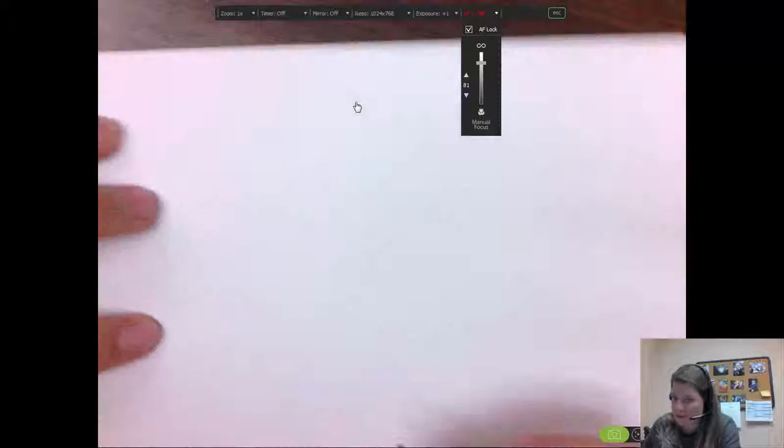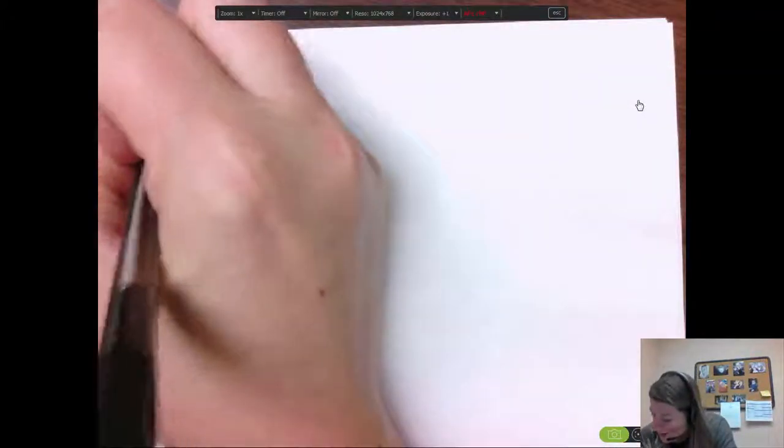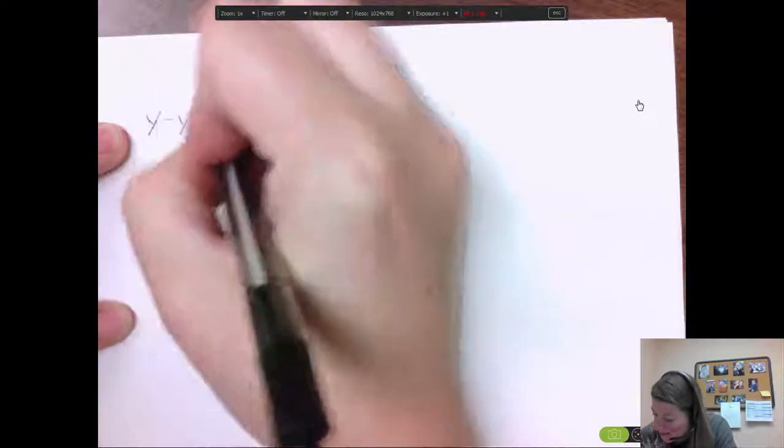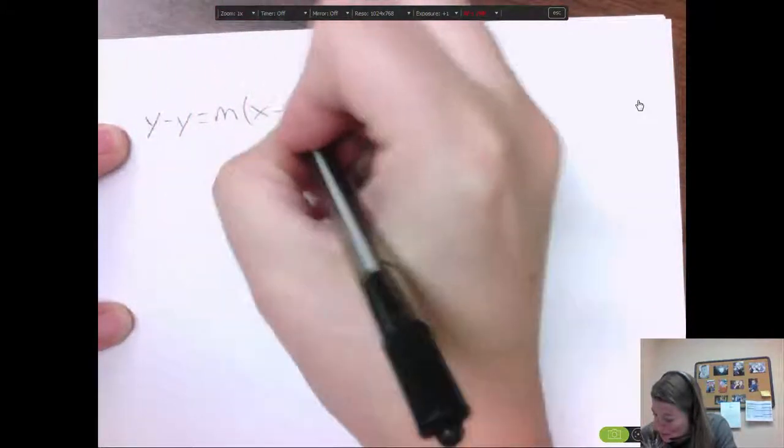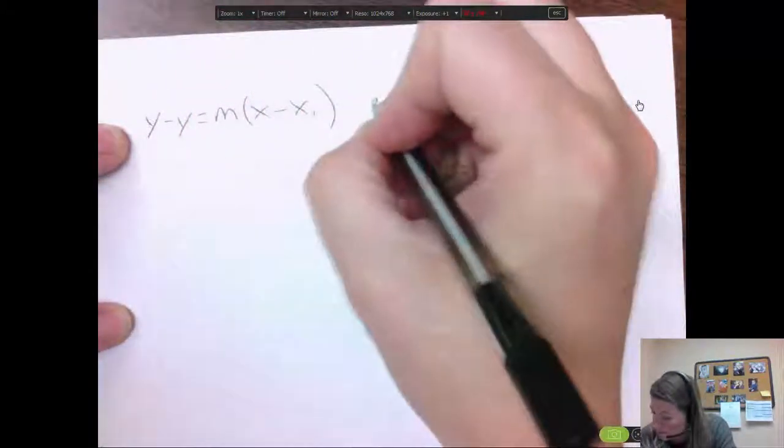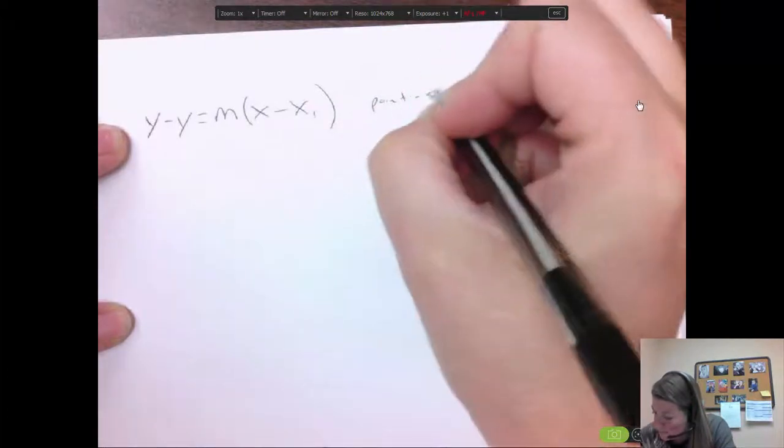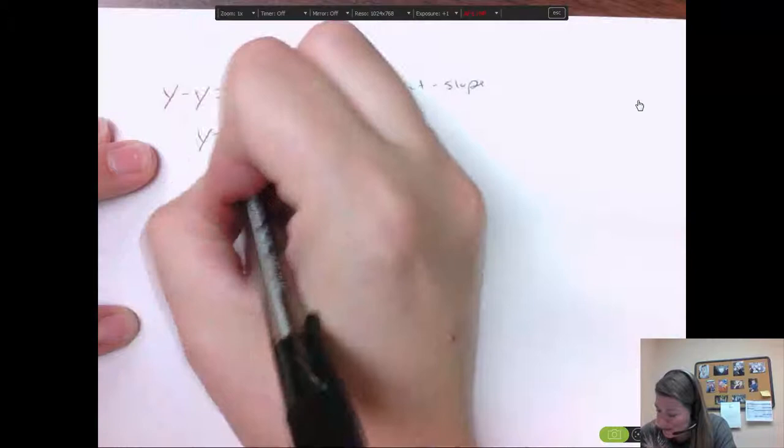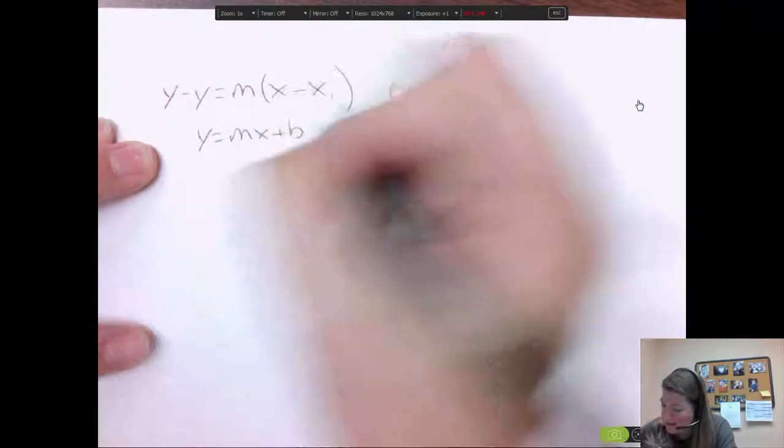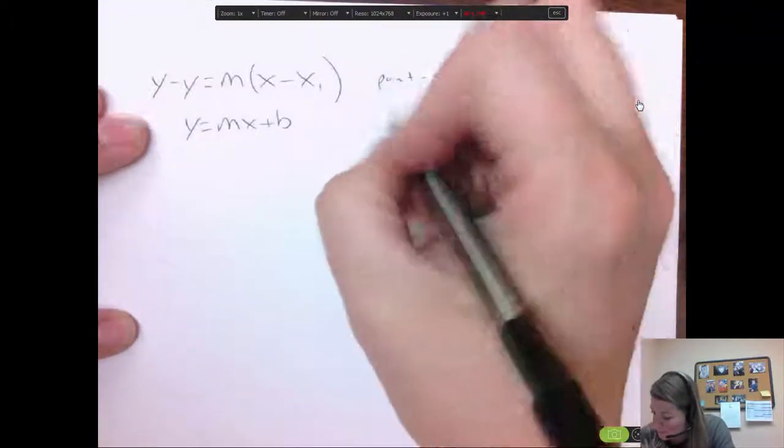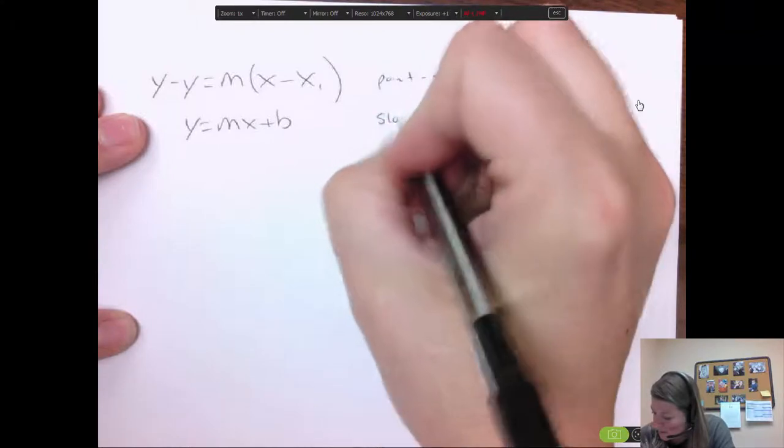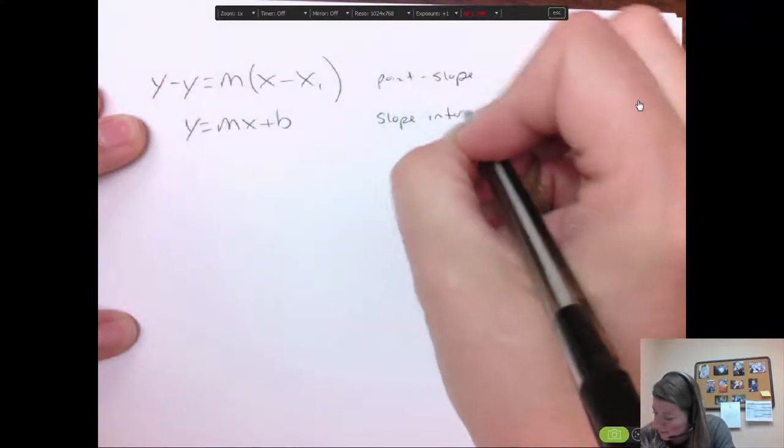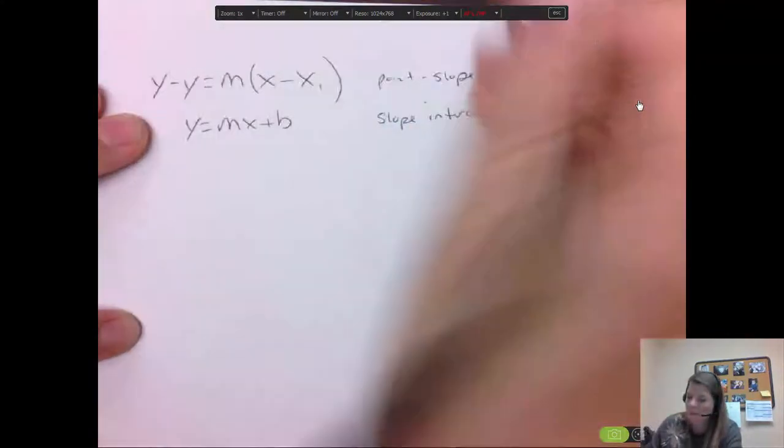The first equation that I want you to be aware of is point slope equation. So point slope says that you have y minus y1 equals m times x minus x1, and this is just called point slope. And then also you have y equals mx plus b, and this one's called slope intercept. So you just need to be aware of what's what.